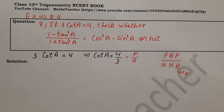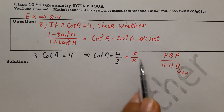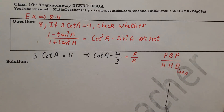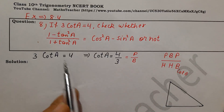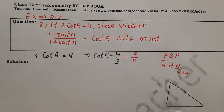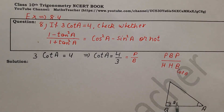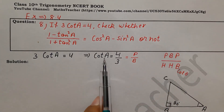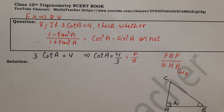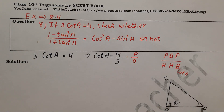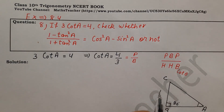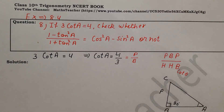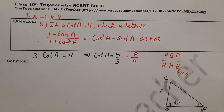P, B, H — these three complete the triangle. Here P and B we know, but H we don't know, so let's draw a triangle. We place angle A at the base, angle B is 90 degrees, and this is C. The angle we are working with is always on the base side, with perpendicular being the side not touching the base.